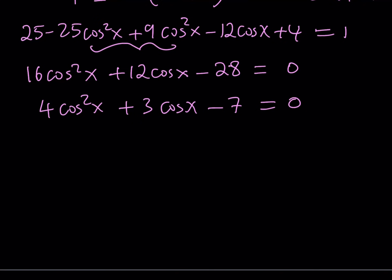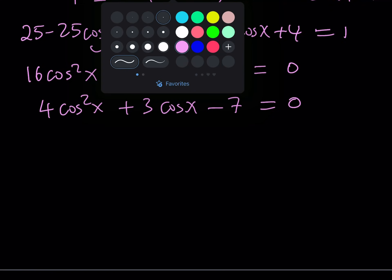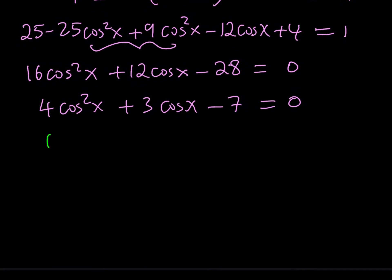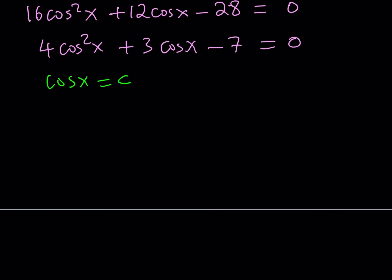One of the things I've been mentioning when dealing with polynomials is that if the sum of the coefficients of a polynomial equation is 0, then 1 is a solution. This isn't polynomial — it's trigonometric — but we can turn it into a polynomial equation by substitution. Let's call cosine x equal to c. That gives us 4c squared plus 3c minus 7 equals 0.